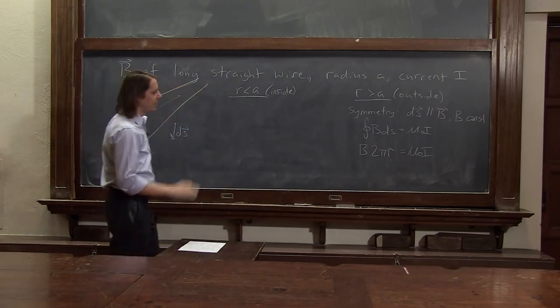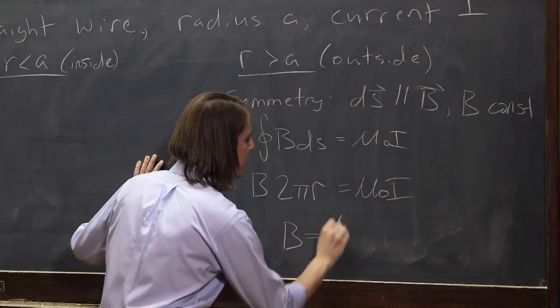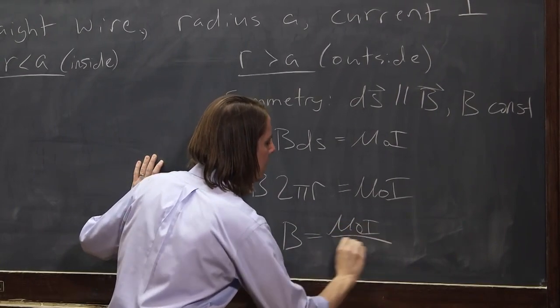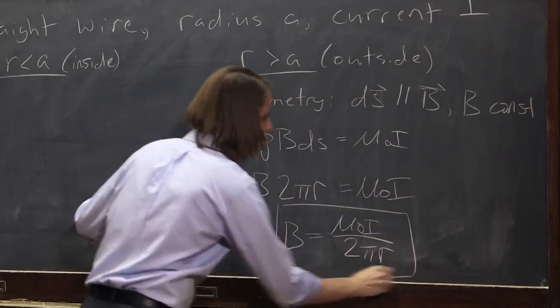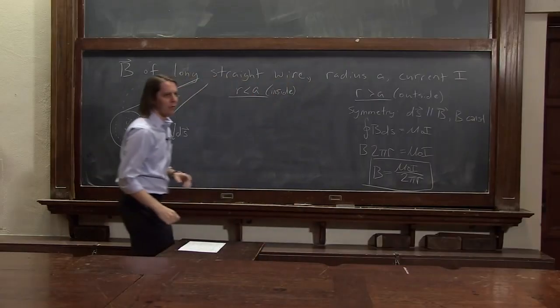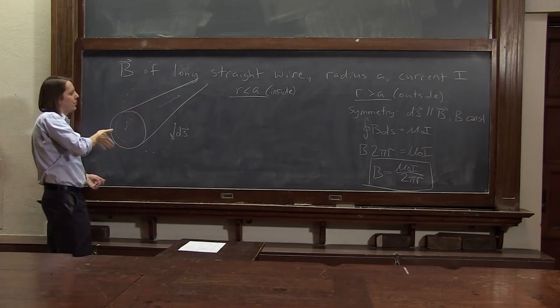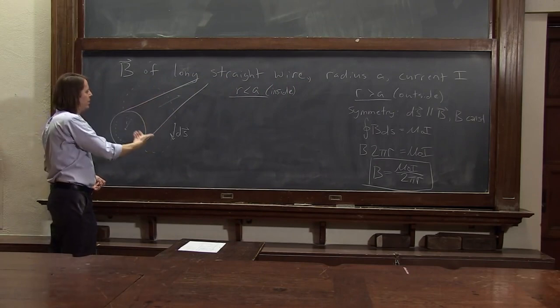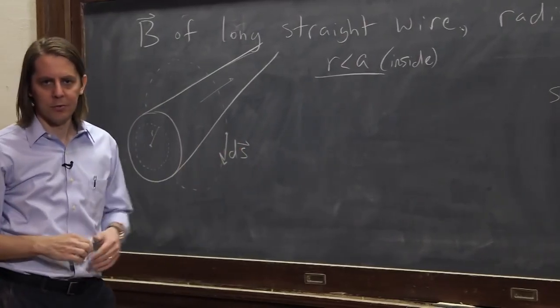So B times 2 pi R equals mu naught I. So then you're pretty much done. The B field around the wire, its magnitude is mu naught I over 2 pi R, which is the same thing we got when we applied the Biot-Savart law. And the direction is that it goes around. Following the right-hand rule, if you put your thumb along the current in the wire, your fingers go around the direction of the B field.